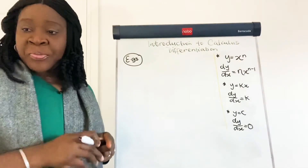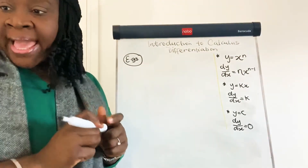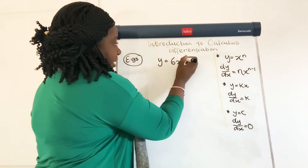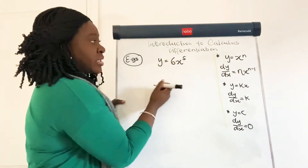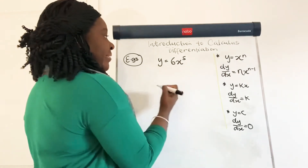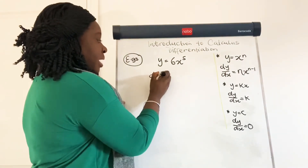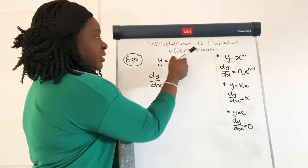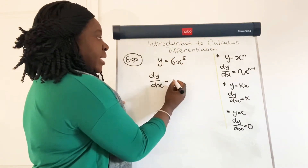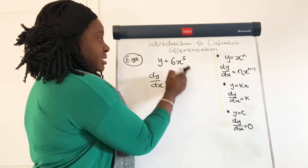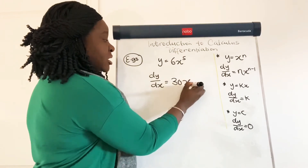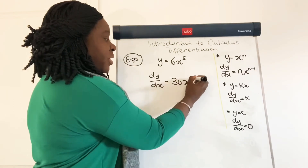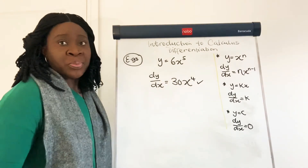Here's another example: y is equal to 6x to the power of 5. If we want to go by this rule, then dy by dx would be equal to — if we times the coefficient of x by the power, then that would be 30, since 6 times 5 is 30. Then x to the power of — we reduce the power by 1 — giving 30x to the power of 4. And that would be the answer to that one.